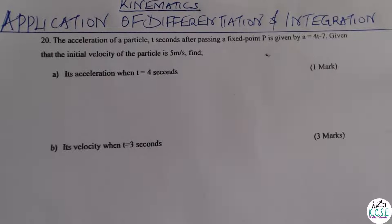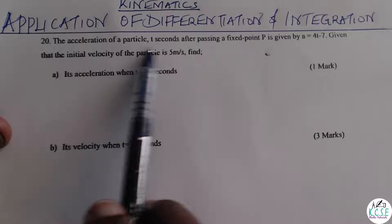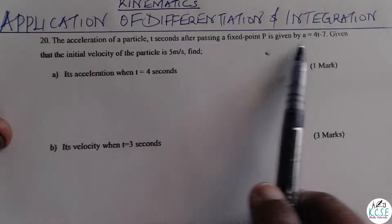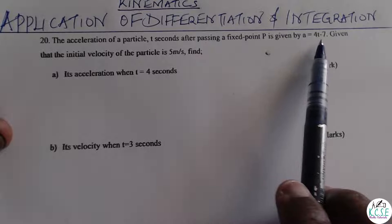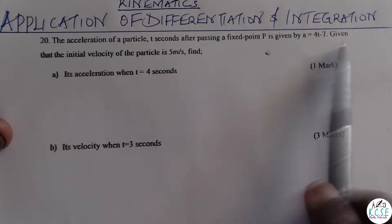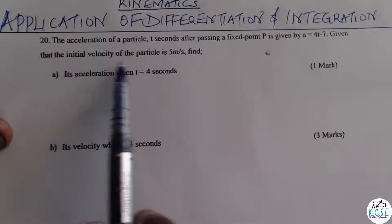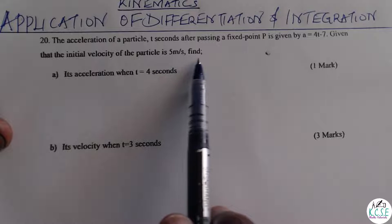Welcome. Application of differentiation and integration in kinematics. The acceleration of a particle t seconds after passing fixed point P is given by A equals 4t minus 7. Given that the initial velocity of the particle is 5 meters per second.